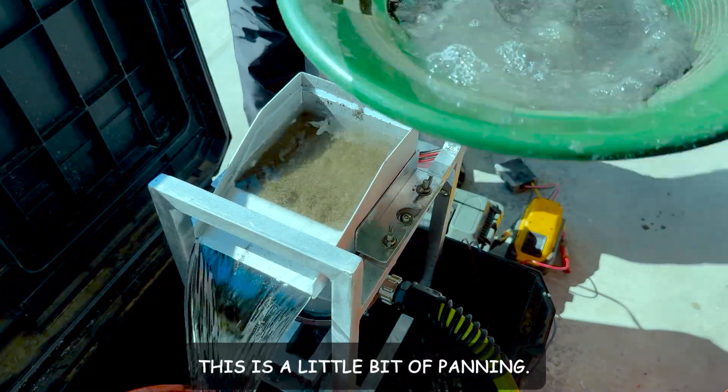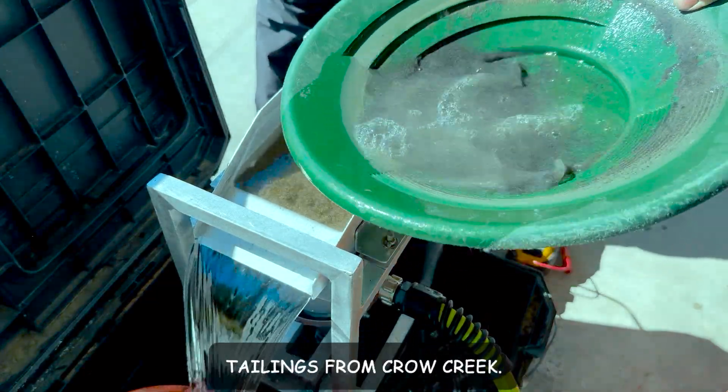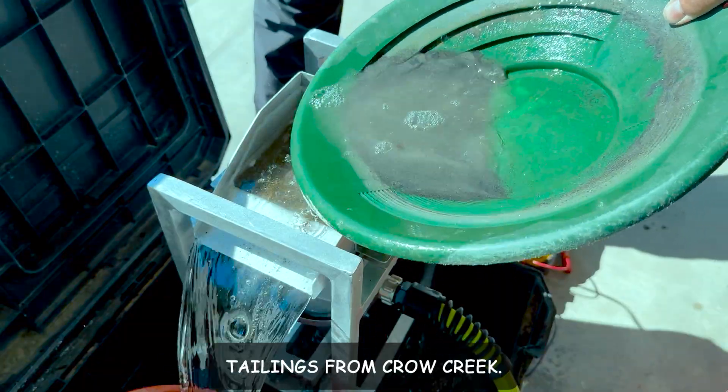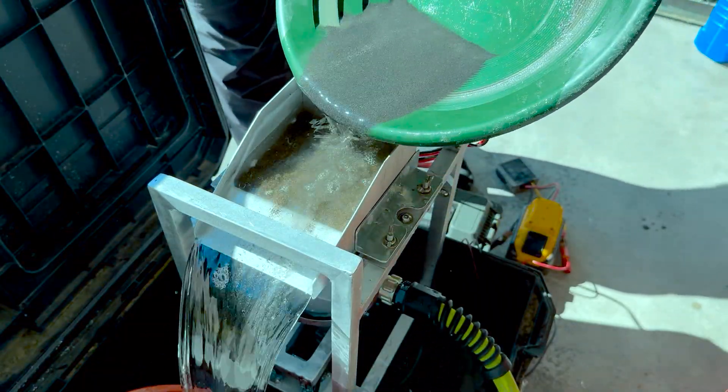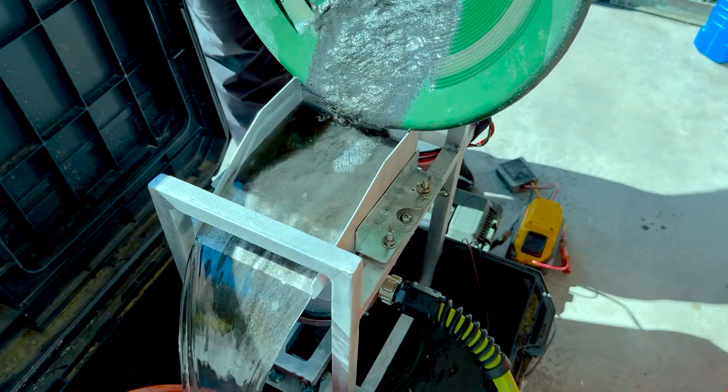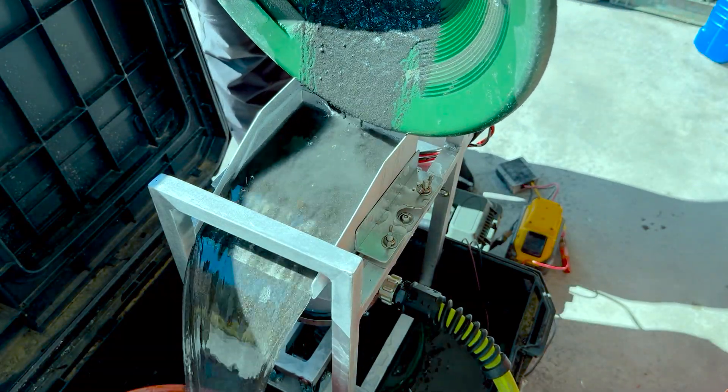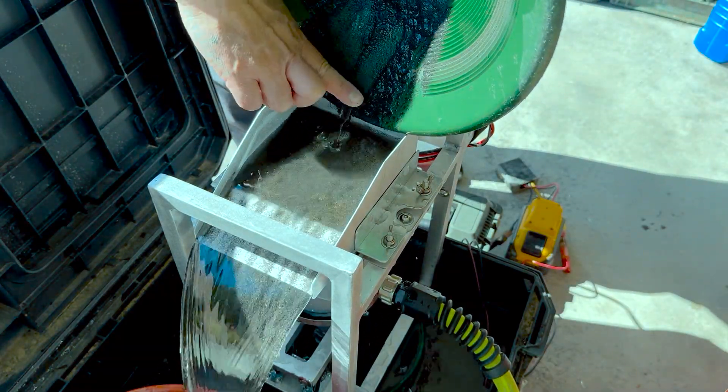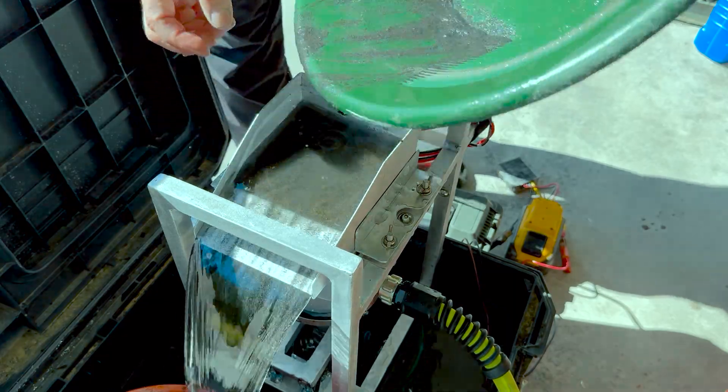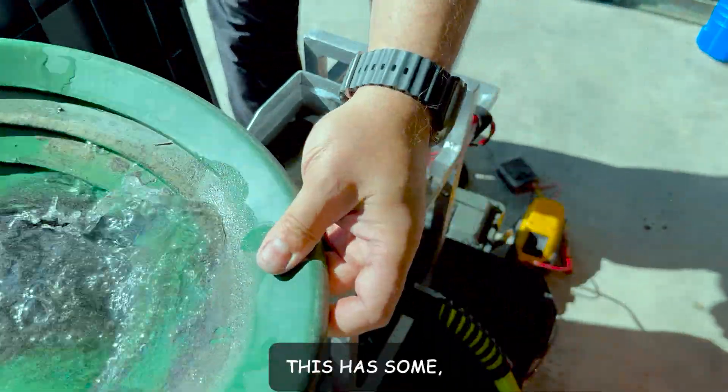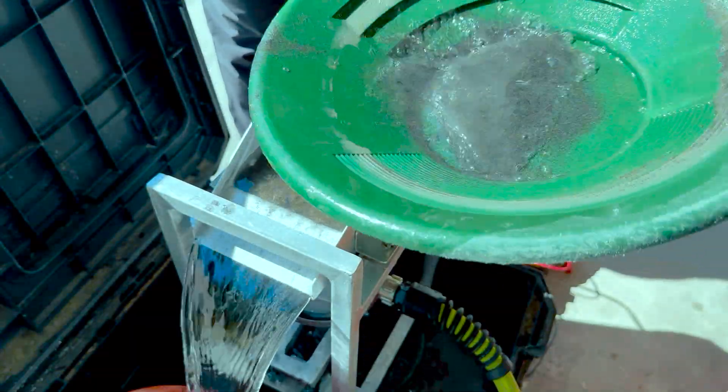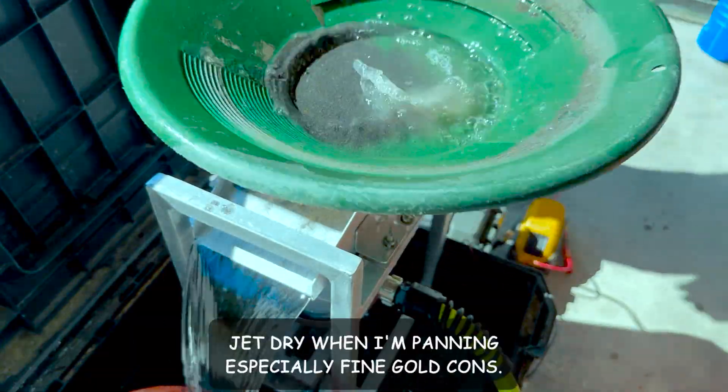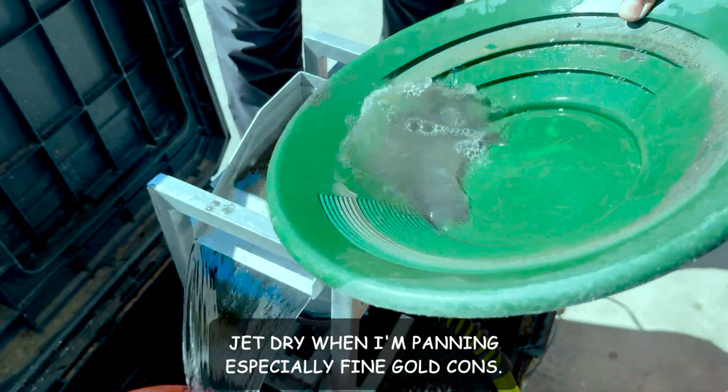This is a little bit of panning tailings from Crow Creek. It could easily be some gold in here. And this has some jet dry in it. There's a lot of jet dry when I'm panning, especially fine gold.